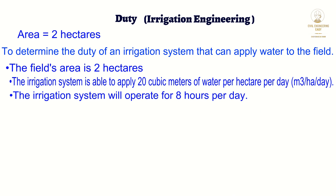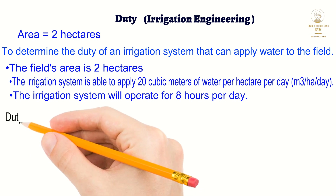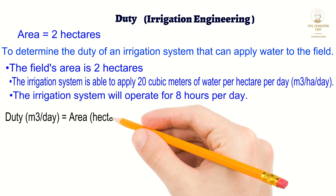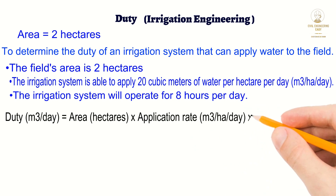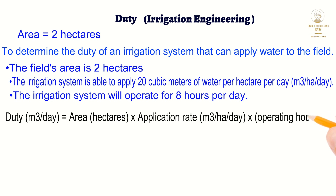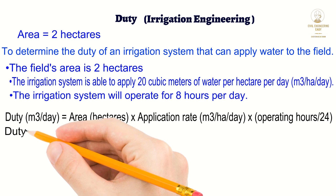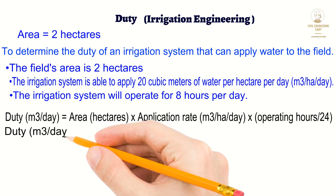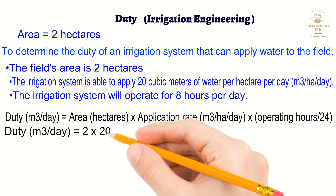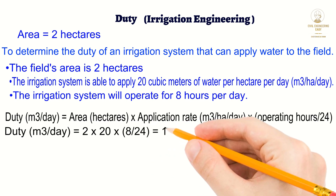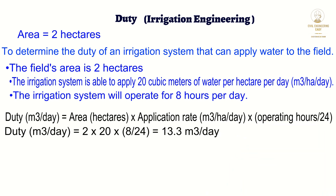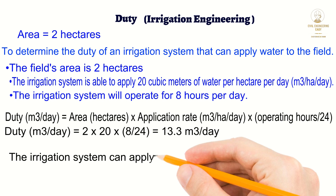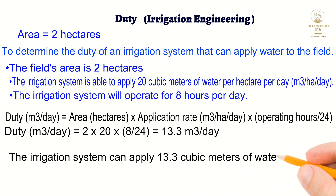To calculate the duty of the irrigation system, we use the following formula: Duty (cubic meters per day) = Area (hectares) × Application rate (cubic meters per hectare per day) × Operating hours ÷ 24. In this case, duty = 2 × 20 × 8 ÷ 24 = 13.3 cubic meters per day. This means that the irrigation system can apply 13.3 cubic meters of water per day to the 2 hectare field for 8 hours of operation.